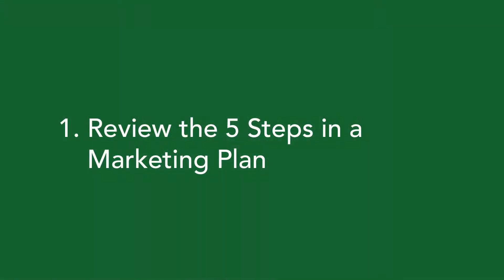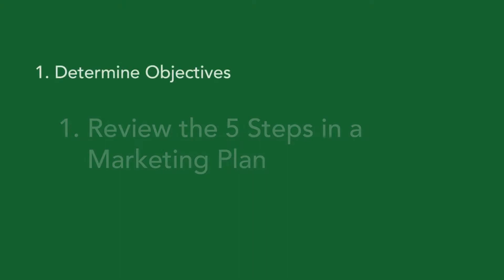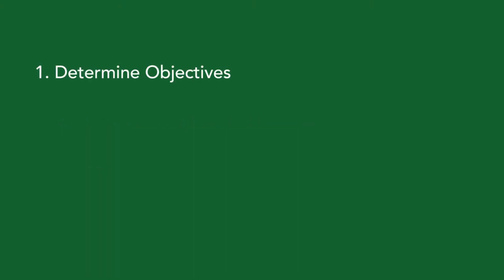Our first topic is to review the five steps in implementing that marketing plan. Number one: determine your objective to manage risk and volatility — it has to be precise.